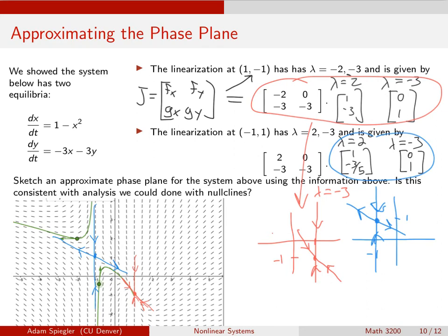So now, once you find all these equilibria and you understand how things look near each equilibrium, then you just start to patch them together and you can piece together the full approximate phase plane. I'll stop with that discussion.